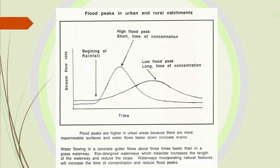Why is there more trouble in urban areas versus rural areas? In urban areas, we've replaced dirt and earth with concrete. Water flowing in a concrete gutter is three times faster than over grass. We have to learn how to control that water so we can use it in a more appropriate manner.